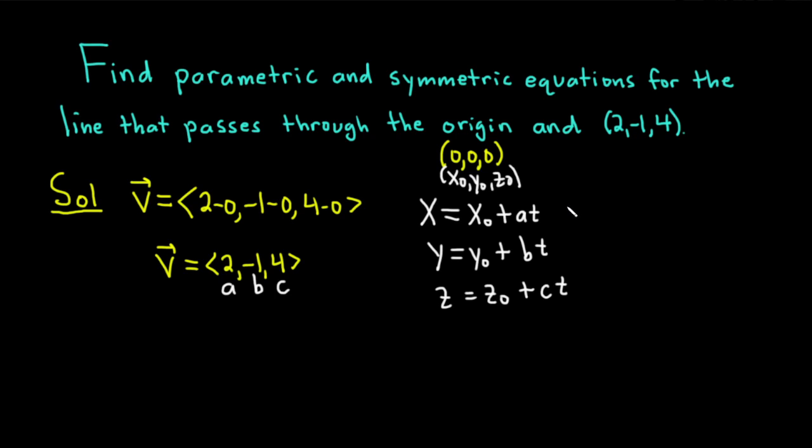So that means that we have x equals, so if we take x0 to be 0, pretty easy, so we just get a t. It'll be 2t.